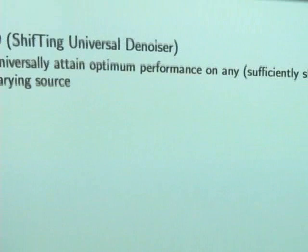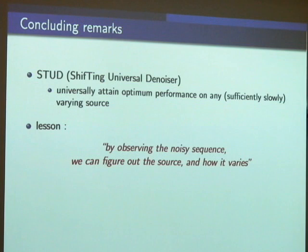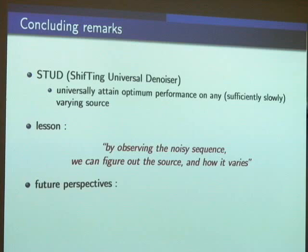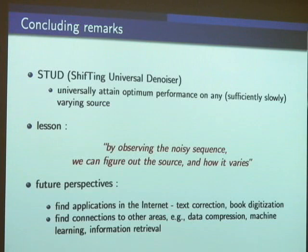In conclusion, I have presented a new algorithm called STUD which universally attains the optimal denoising performance on any sufficiently slowly varying source — where 'sufficiently slowly' means the number of shifts is sublinear in sequence length n. I also showed that if the source varies too fast, no denoiser can do better. What we learned is that by observing the noisy sequence long enough, we can figure out what the source is and how it varies. As future work, we plan to find applications in internet text correction or book digitization, and hope to find connections to data compression, machine learning, and information retrieval.